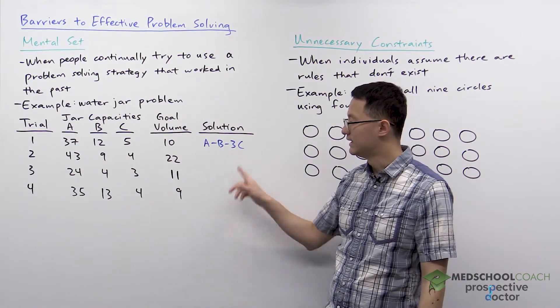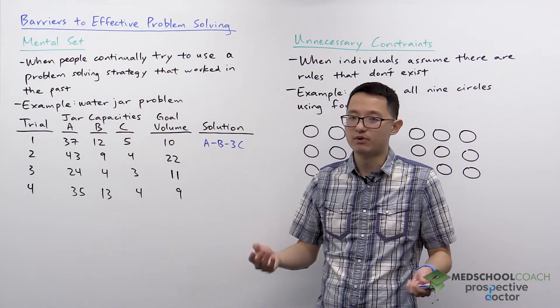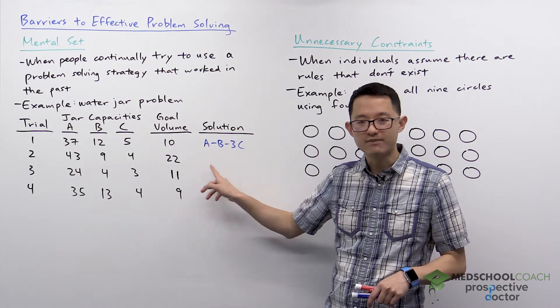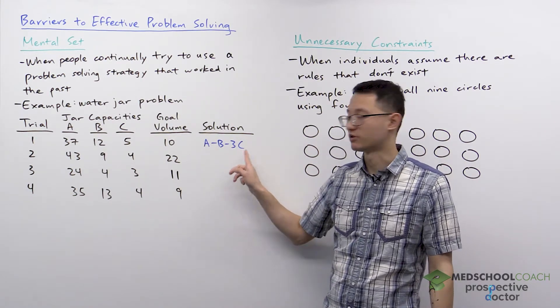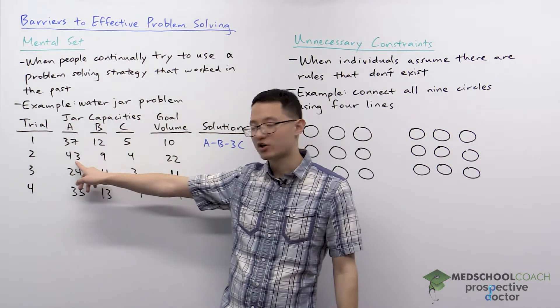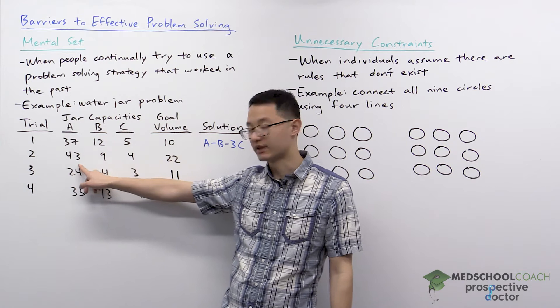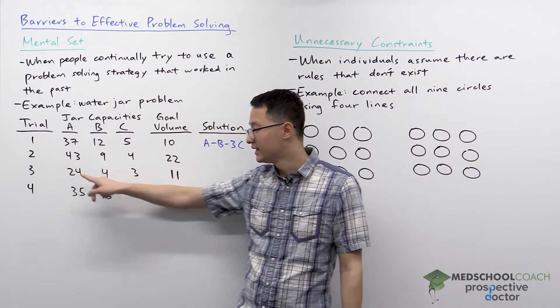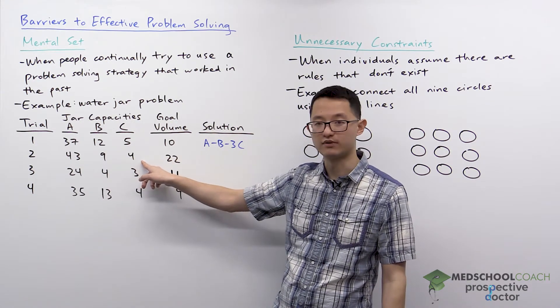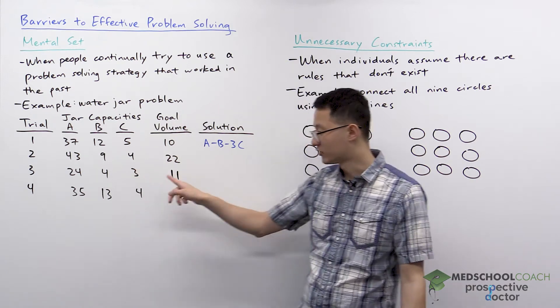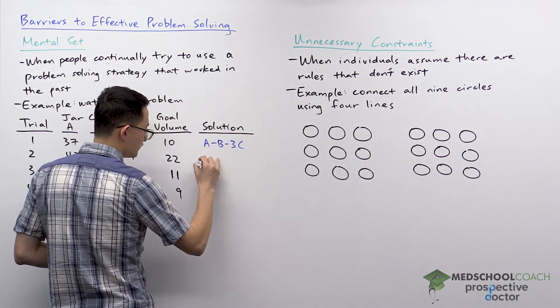What happens to most people is that trial one takes them some amount of time to figure it out. It's not that simple of a problem. However, trial two they're able to do faster because the first thing they think of is, well this solution worked, why don't I just try it again? If I fill jar A with 43 cups of water, if I pour that into B, that gets rid of 9 cups of water, so I'm left with 34 cups of water. If I pour into C three times, that's going to get rid of 12 cups of water, leaving me with 22 cups of water, which is exactly what I'm looking for. So they're going to be able to solve trial two faster.